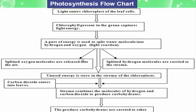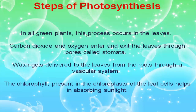The photosynthesis flowchart: light enters the chloroplast of leaf cells. Chlorophyll present in the grana captures light energy. Part of the energy is used to split water molecules into hydrogen and oxygen. The split oxygen molecules are released into the air, and the split hydrogen molecules are carried to the stroma to maintain the H⁺ gradient. Unused energy is stored in the stroma. Carbon dioxide also enters the leaves, and the stroma combines hydrogen and carbon dioxide molecules to produce carbohydrates, which are then carried to other plant cells.